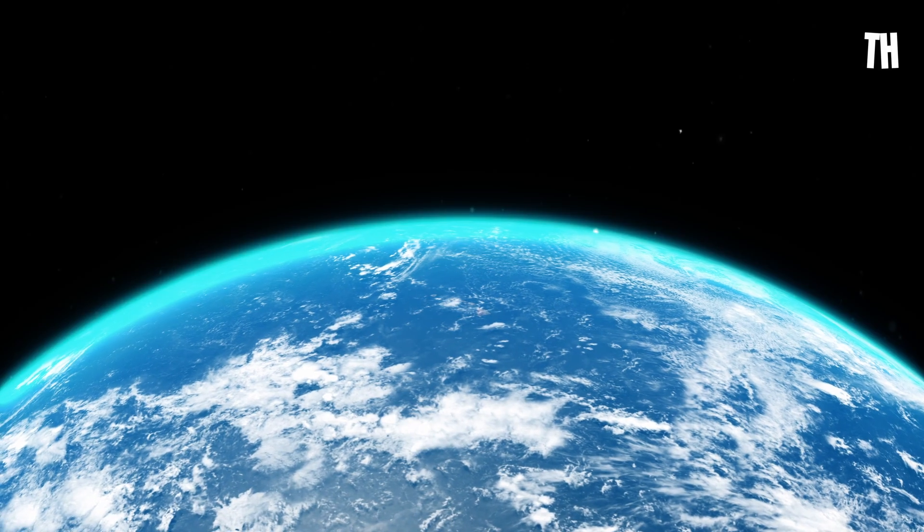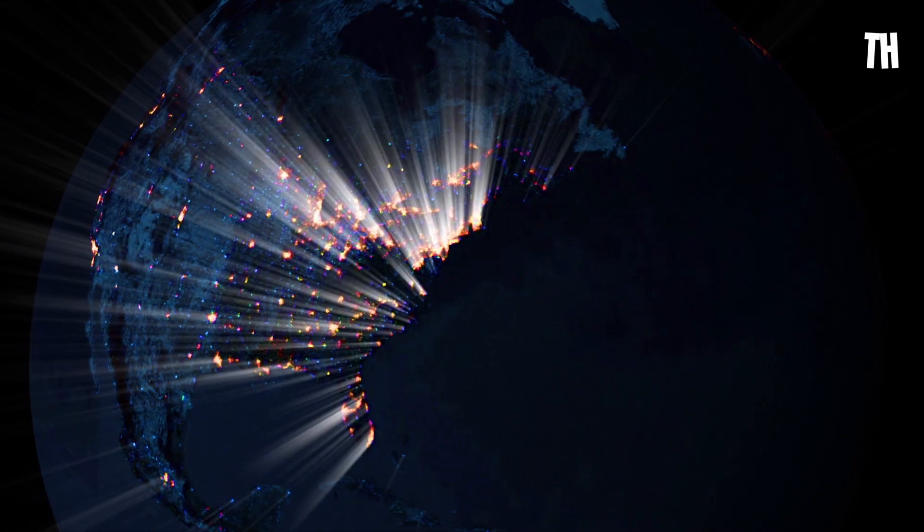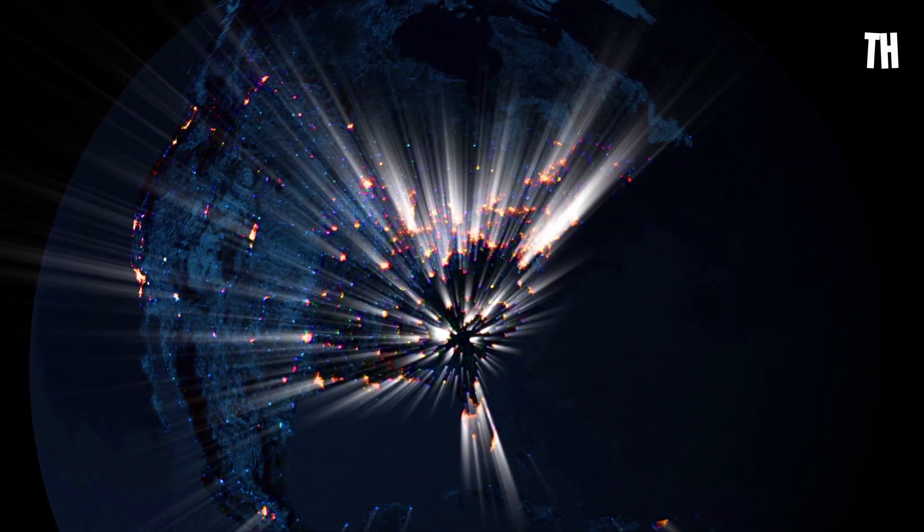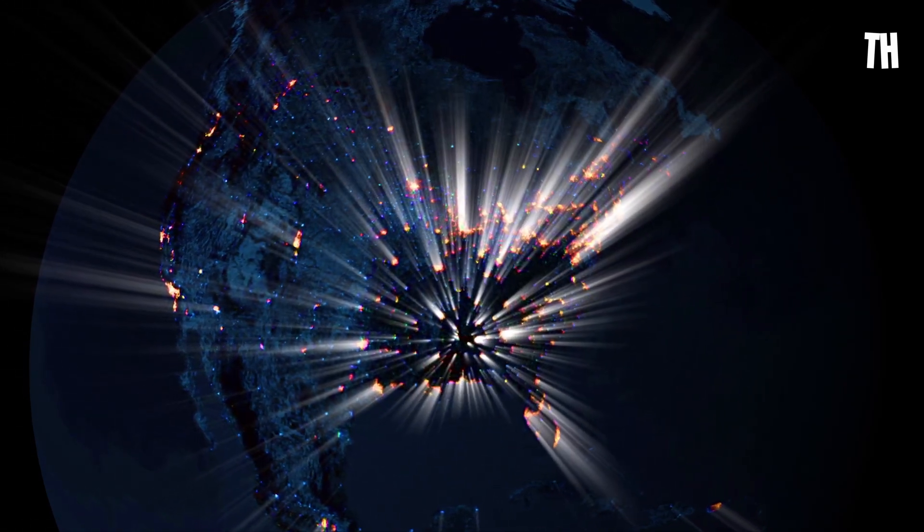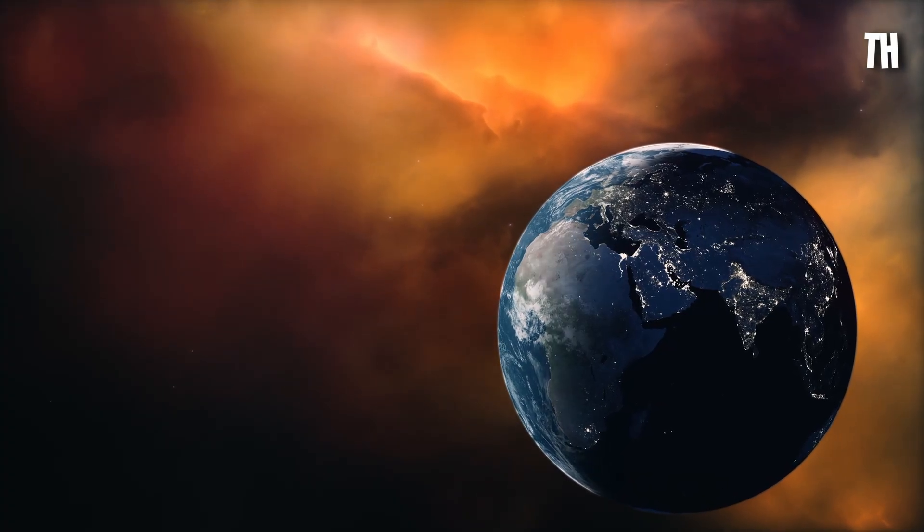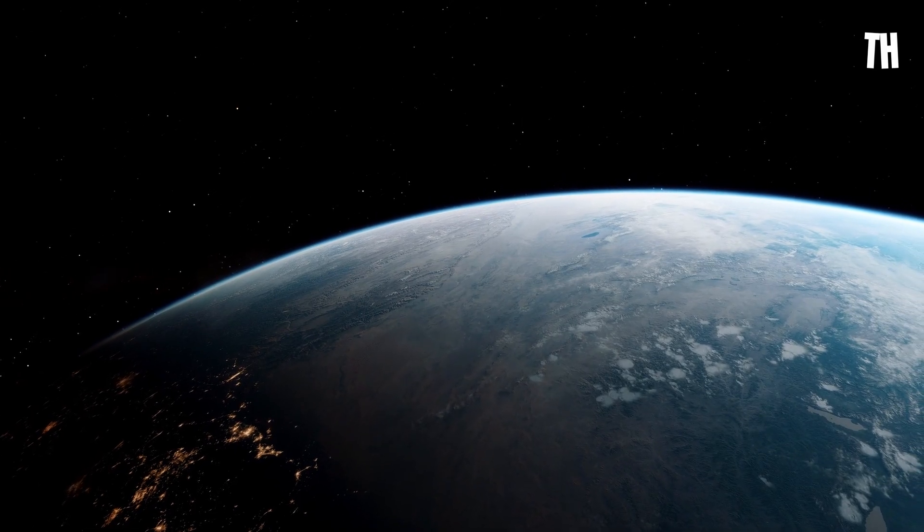In five seconds, the ozone layer is obliterated. Not weakened, not damaged, just gone. Vaporized by the relentless energy of the gamma-ray burst, leaving our planet fully exposed to the sun's ultraviolet radiation. UVC rays, normally filtered out completely, now reach the ground.